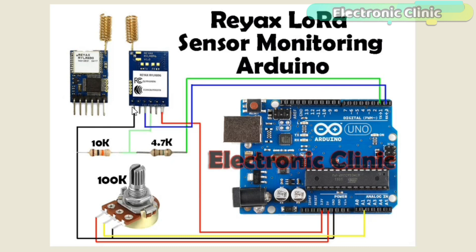The ground of the LoRa module is connected with the ground of the Arduino. The middle leg of the variable resistor or potentiometer is connected with the analog pin A1 of the Arduino while the other two legs of the variable resistor are connected with the five volts and ground.